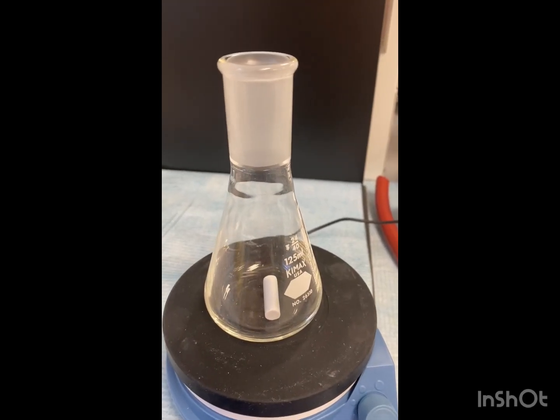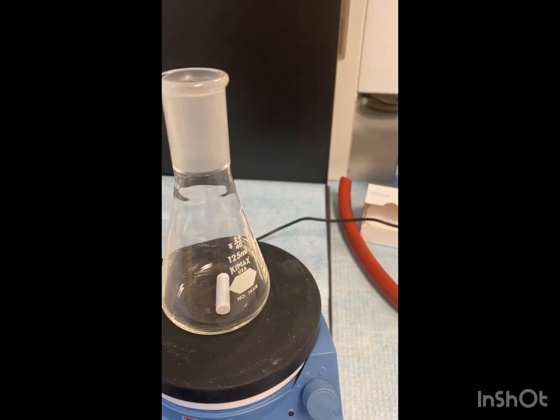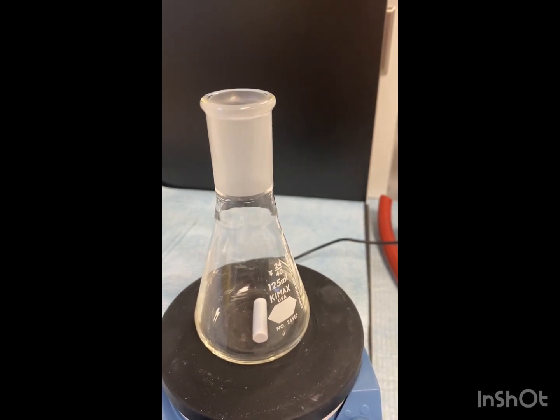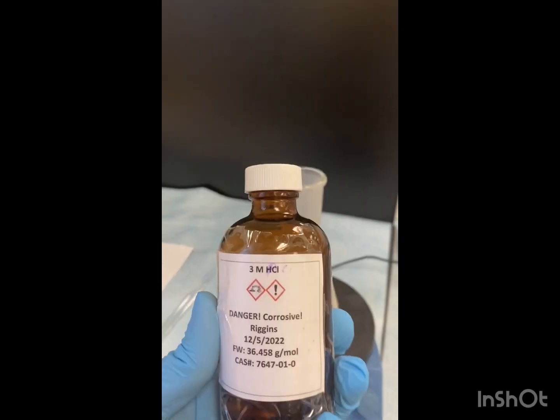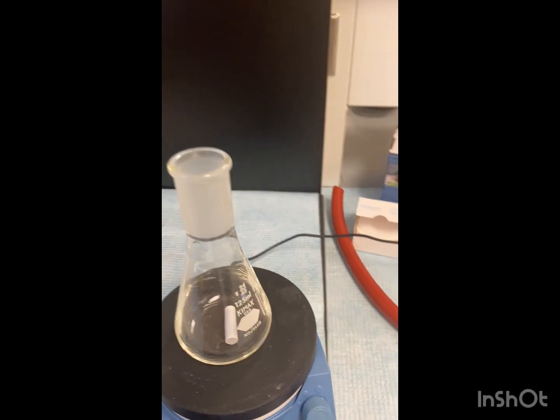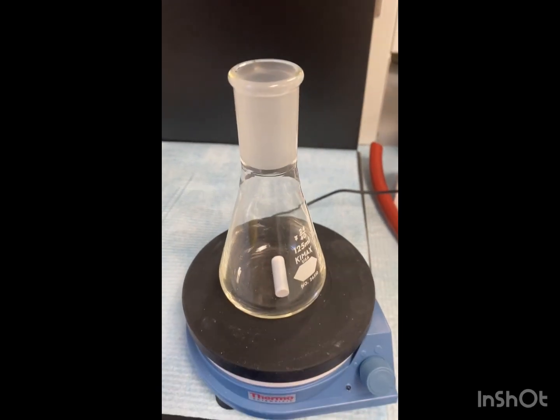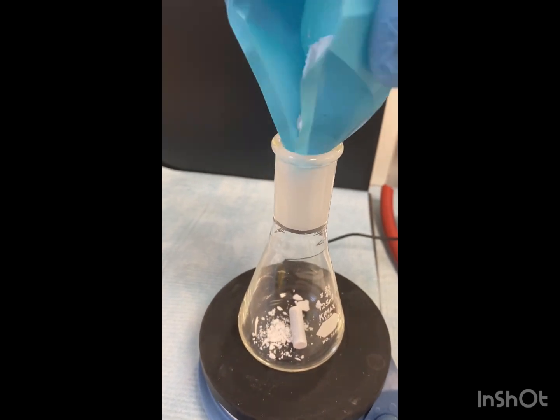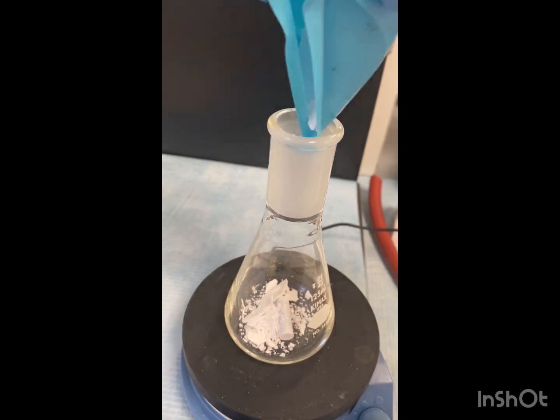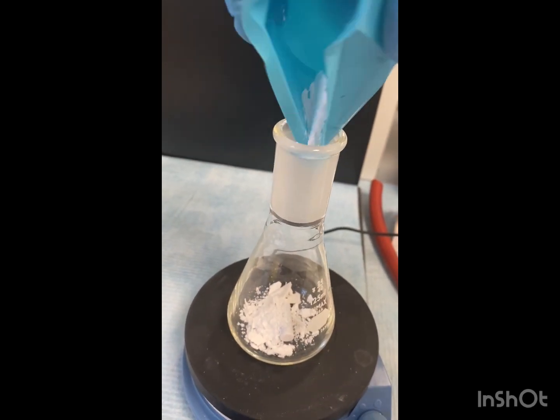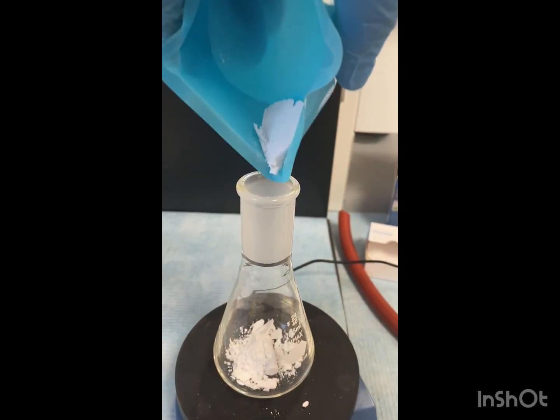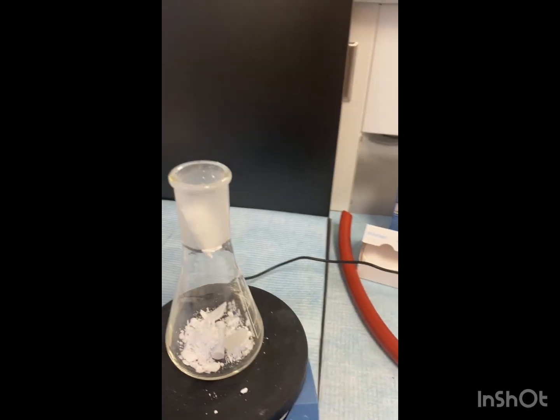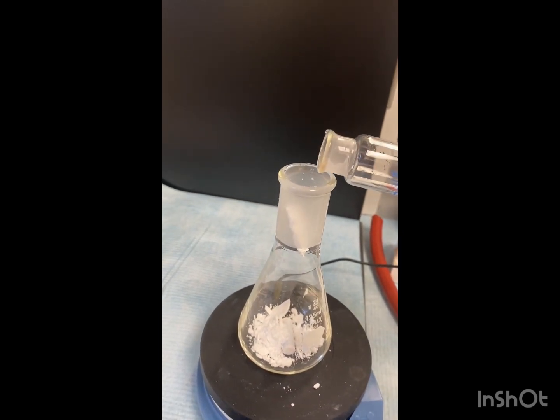Here we have our 125 milliliter Erlenmeyer flask. We're going to transfer our solid into this. Notice I added a stir bar, because we're going to be mixing this with 25 mils of three molar hydrochloric acid. So mixing it with this. Just be extremely careful because the HCl is very corrosive. So we're going to add our solid.